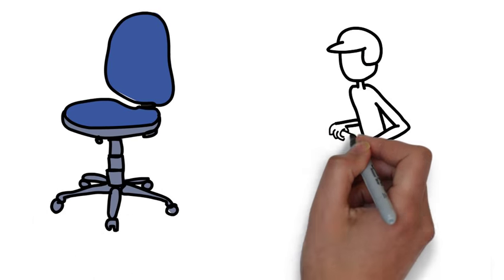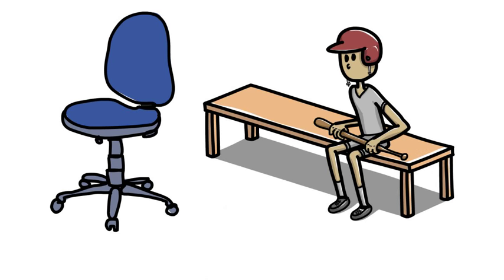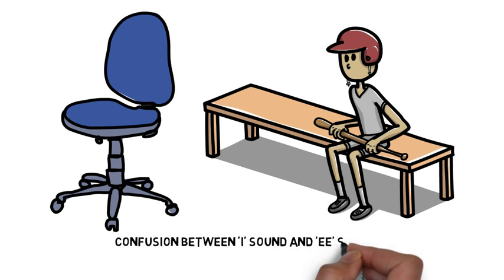The next mistake is to do with confusion between the I sound and E sound, so seat and sit. One is the noun, one is the verb. Seat, sit.